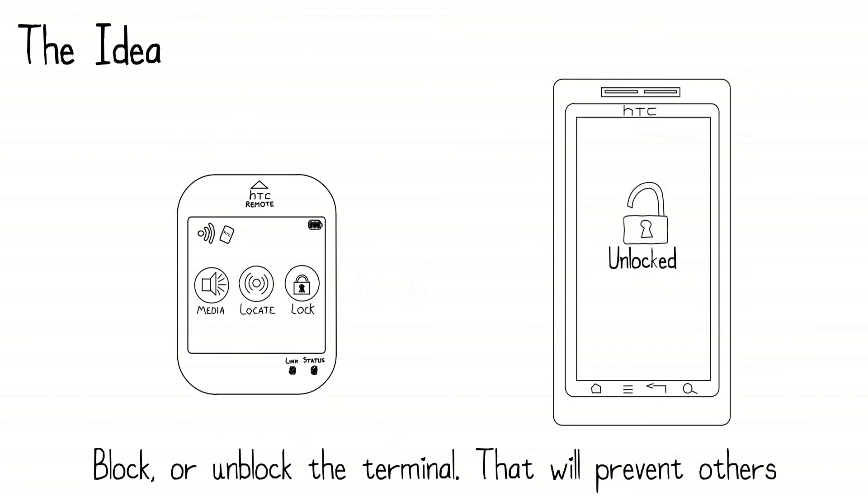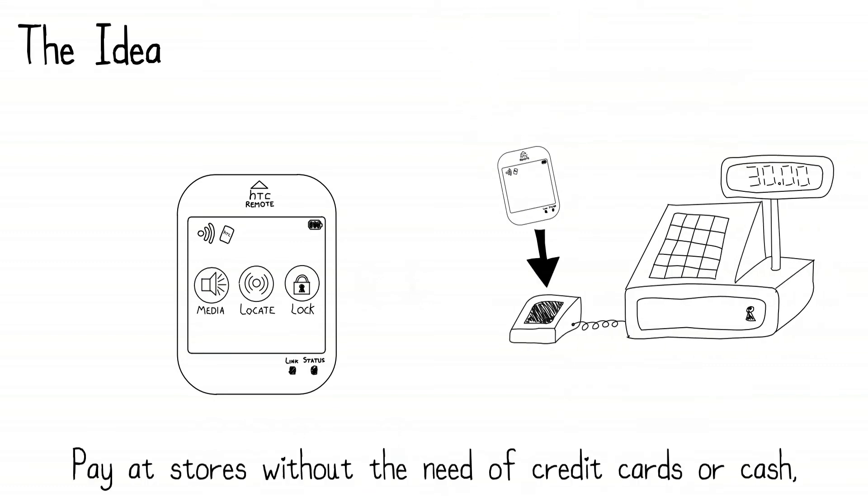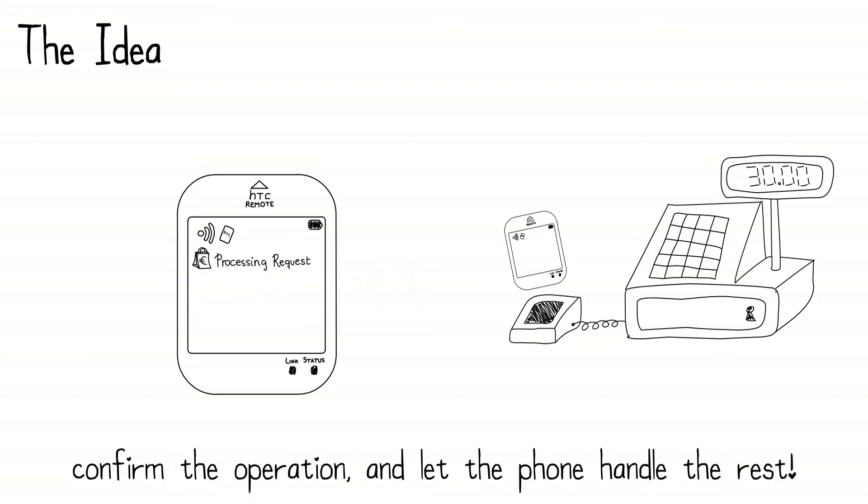Block or unblock the terminal. That will prevent others from accessing your private information. Pay at stores without the need of credit cards or cash. Just place the device next to the selling point, confirm the operation, and let the phone handle the rest.